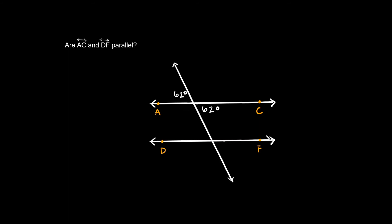Again, we're trying to figure out if AC and DF are parallel, and it's telling us these two angles are congruent — both 62 degrees. But here we don't have enough information to relate line AC to DF. Even if we use supplementary angles, we could fill in the blanks — 180 minus 62 gives us 118 degrees — but there's nothing we can take from these angles to relate to the angles over the other line. All the information given is simply over one line. We don't have any information about the other line, so we cannot prove AC and DF are parallel.